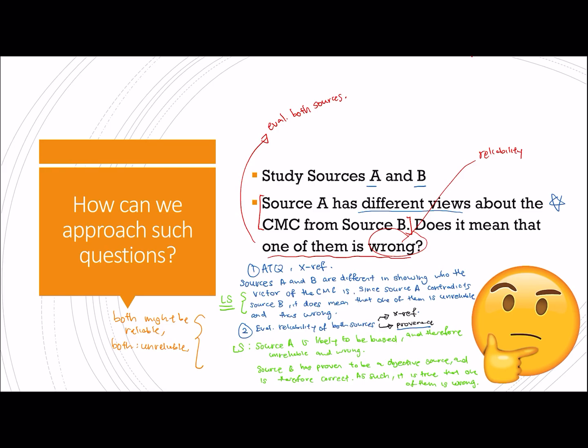although source A and B have different views about the Cuban Missile Crisis, it doesn't mean that one of them is wrong because it has been proven that both are reliable. Or, source A and B have different views about the CMC however, it does, it could also mean that both of them are wrong because both have been proven to be unreliable.